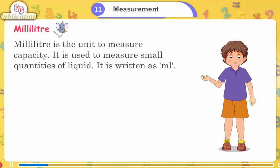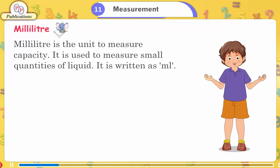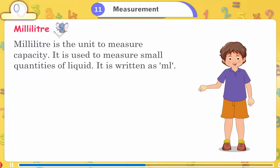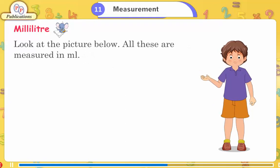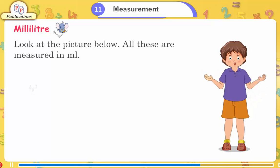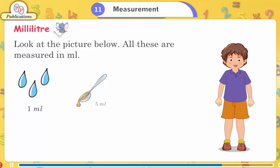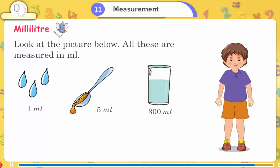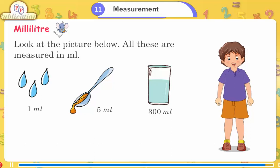Milliliter is the unit used to measure capacity for small quantities of liquid, written as ml. Look at the pictures — all these are measured in ml: 1 ml, 2 ml, 5 ml, 300 ml.